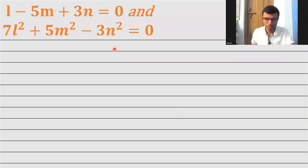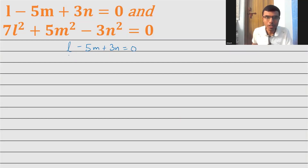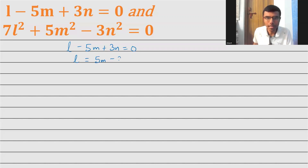So it's relatively an easy question. Now how I'm going to begin is, let's just write down the first relation: l minus 5m plus 3n is equal to 0. This is my first relation. Now I'm going to simplify it a little. I'm going to write this as l equal to 5m minus 3n. I just simplified the first relation.